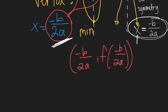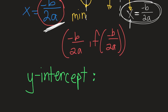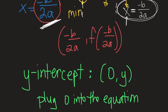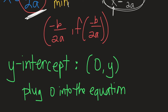Another attribute we can find is the Y-intercept — the point on your graph where it crosses the Y-axis. Every Y-intercept has an X value of zero. So you plug zero into your equation for X. Normally things cancel out and you just get your C value. You do the simplification and that number is your Y-intercept.